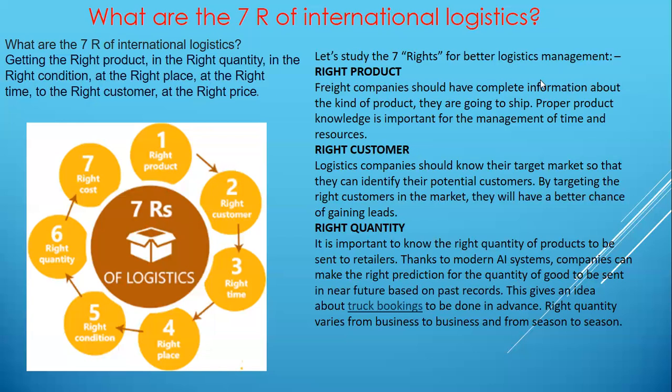Thanks to modern AI systems, companies can make the right production predictions for the quantity of goods to be sent in the near future, based on past records. Before movement of goods is dispatched, the invoice and packing list should define the quantity of goods so they can deliver the same. Without knowing the volume of the goods, delivery should not proceed, as a high volume of goods may exceed transport capacity — so quantity needs to be maintained and communicated to the transport company.